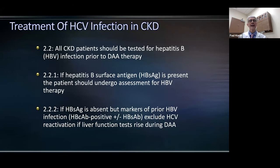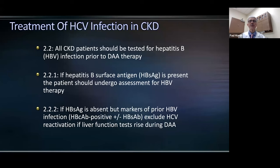Another issue is the potential for successful hepatitis C treatment to cause reactivation of hepatitis B. Hepatitis C and B have a reciprocal relationship — hepatitis C appears to have a suppressant effect on hepatitis B activity. All patients considered for hepatitis C treatment should have hepatitis B markers checked. If the hepatitis B surface antigen is present, the patient should undergo assessment for therapy to prevent hepatitis B reactivation. Even if surface antigen is absent but markers of prior infection — notably hepatitis B core antibody — are present, reactivation during DAA therapy remains possible.